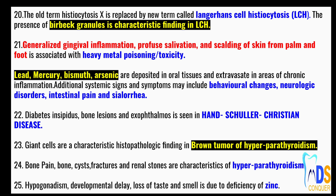Point number twenty-one: generalized gingival inflammation, profuse salivation, and scalding of skin from the palms and feet are associated with heavy metal poisoning or toxicity. Lead, mercury, bismuth, and arsenic are the metals that cause heavy metal poisoning. These metals get deposited in the oral tissues and extravasate in areas of chronic inflammation. Additional systemic signs and symptoms may include behavioral changes.